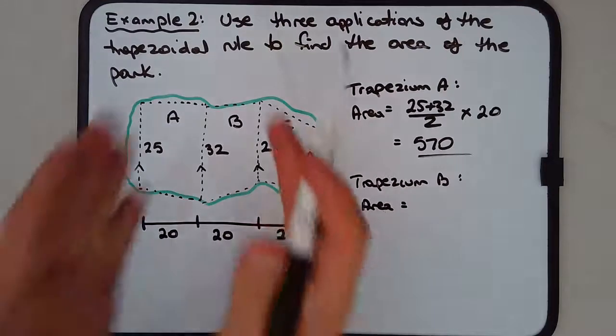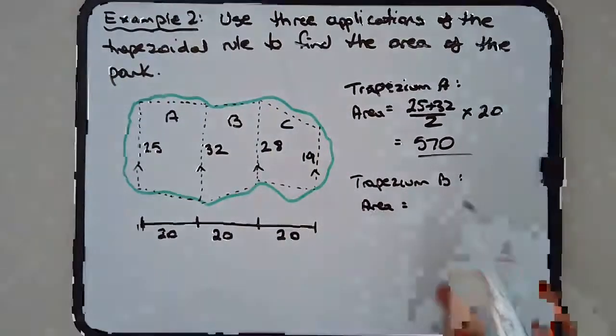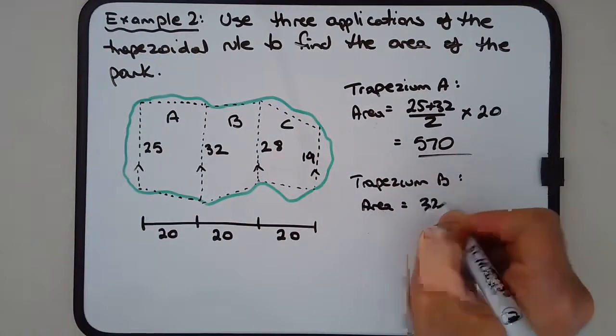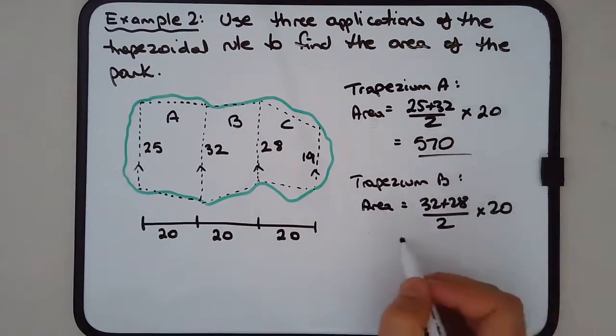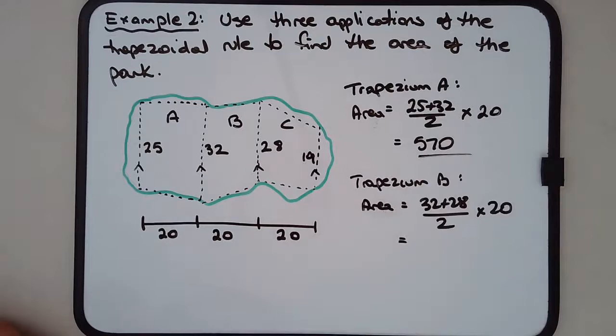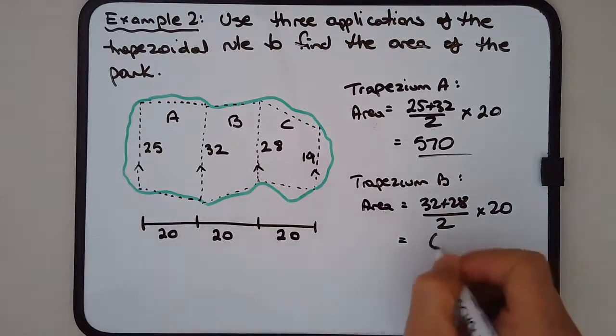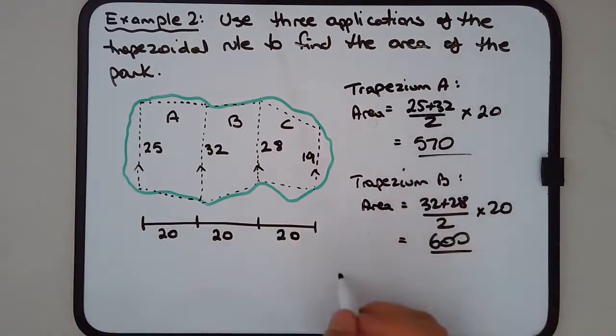32 plus 28 over 2, again times the height of 20. Let me calculate: 32 plus 28, and that gives us 600.